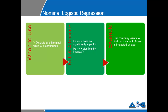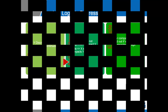For example, if a car company wants to find out if the variant of a car is impacted by age — variant of cars being a nominal data and age being a continuous data — nominal logistic regression test will apply. Hope this video helps you understand when to use NLR or nominal logistic regression. Thank you.